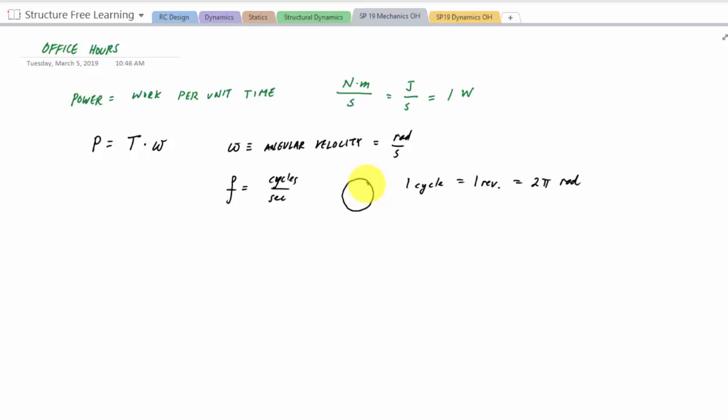So we've been talking about power. And power, again, is work per unit time. It's got units of joules per second or newton meter per second. It's also defined as a watt.